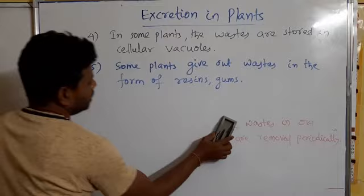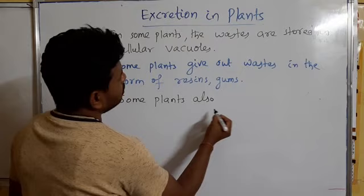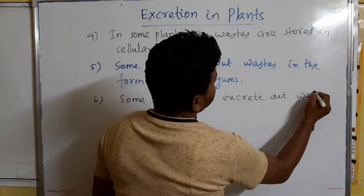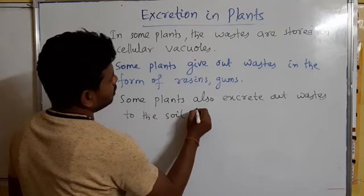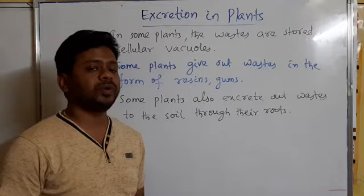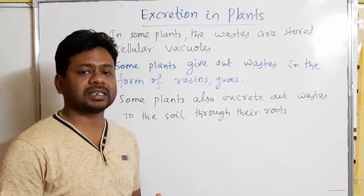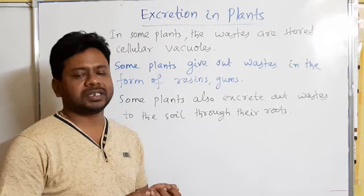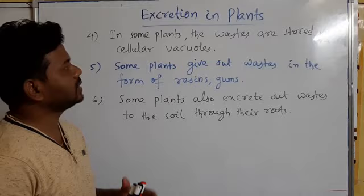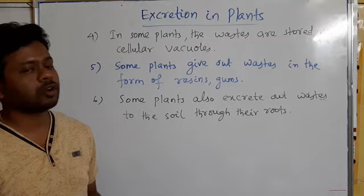The last mode: some plants also excrete out waste to the soil through their roots. Through their roots, they excrete out and give out the waste to the nearby soil. So these are the different six modes of excretion in plants — there is no definite excretory system, but in these different ways plants can give out the waste from their body. This is all about the excretion of plants. Thank you for watching this video — if you like this video, please comment, share, and subscribe.